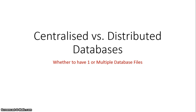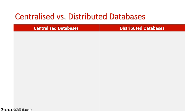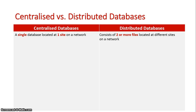We're now going to look at the advantages and disadvantages of centralized and distributed databases. In a centralized database, we have one database file, and in a distributed database we have multiple database files. With a centralized database, there is one single database located at one side of the network. In a distributed database, there are two or more database files located on the network, maybe in different departments and sections, and they need to be synced at the end of the day.